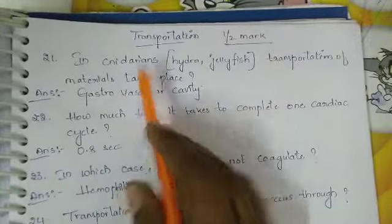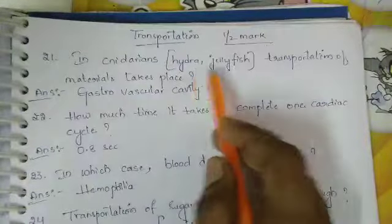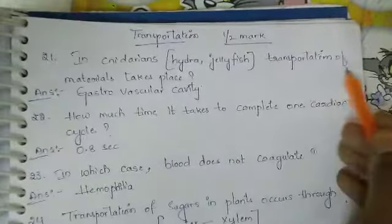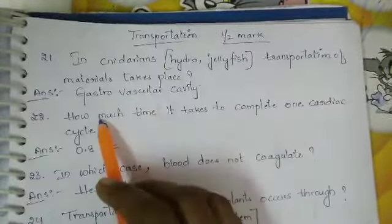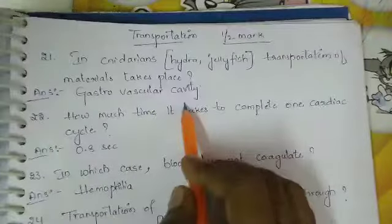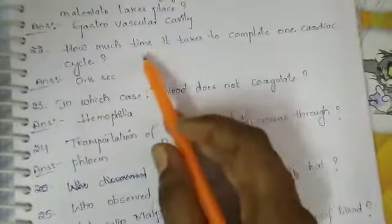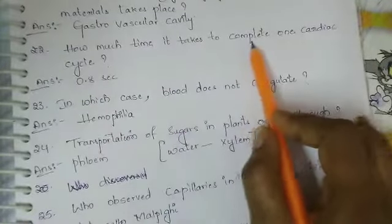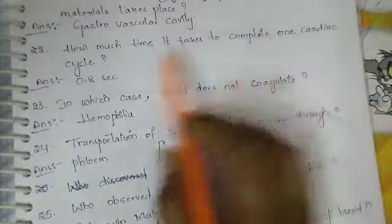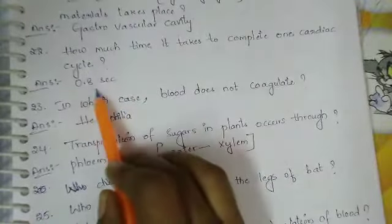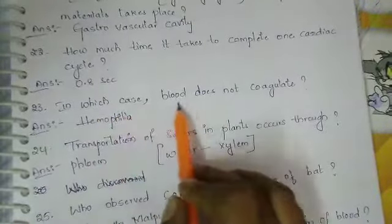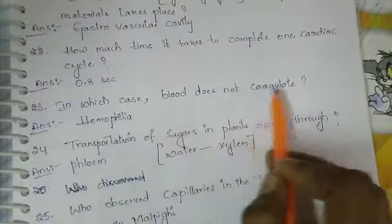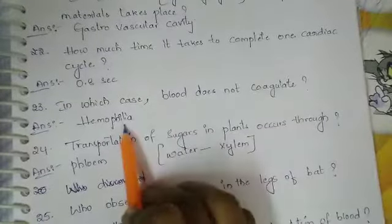In cnidarians — that is hydra or jellyfish — transportation of materials takes place through the gastrovascular cavity. How much time does it take to complete one cardiac cycle? 0.8 seconds. In which case does blood not coagulate? Hemophilia.